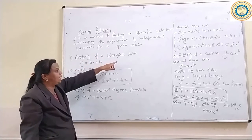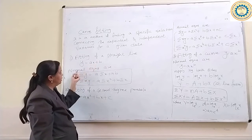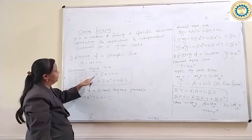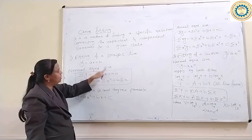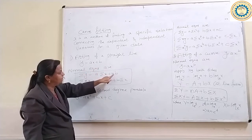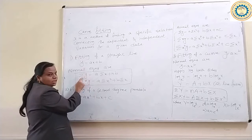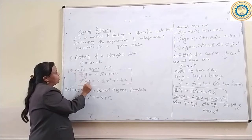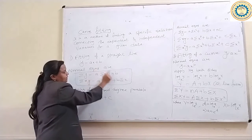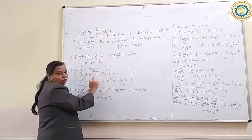First one is fitting of a straight line, which is of the form Y equal to AX plus B. For this, we write the normal equations. First, apply summation: summation of Y equal to A into summation of X plus N into B. Second, multiply by X: summation of XY equal to A into summation of X square plus B into summation of X. These are the normal equations for a straight line.